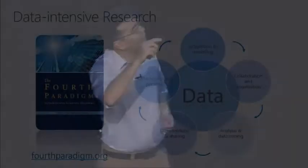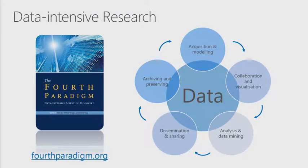When we think about the scientific discovery process or any research project, we generally have some idea, hypothesis, or question we're trying to answer. We might get some data, do some modeling, and work with our colleagues to understand that. We might then do some analysis and data mining, and then typically we'll disseminate and share that — in the academic world that's typically a publication. That goes to a journal, gets archived so other people can access it. That is essentially the research life cycle.